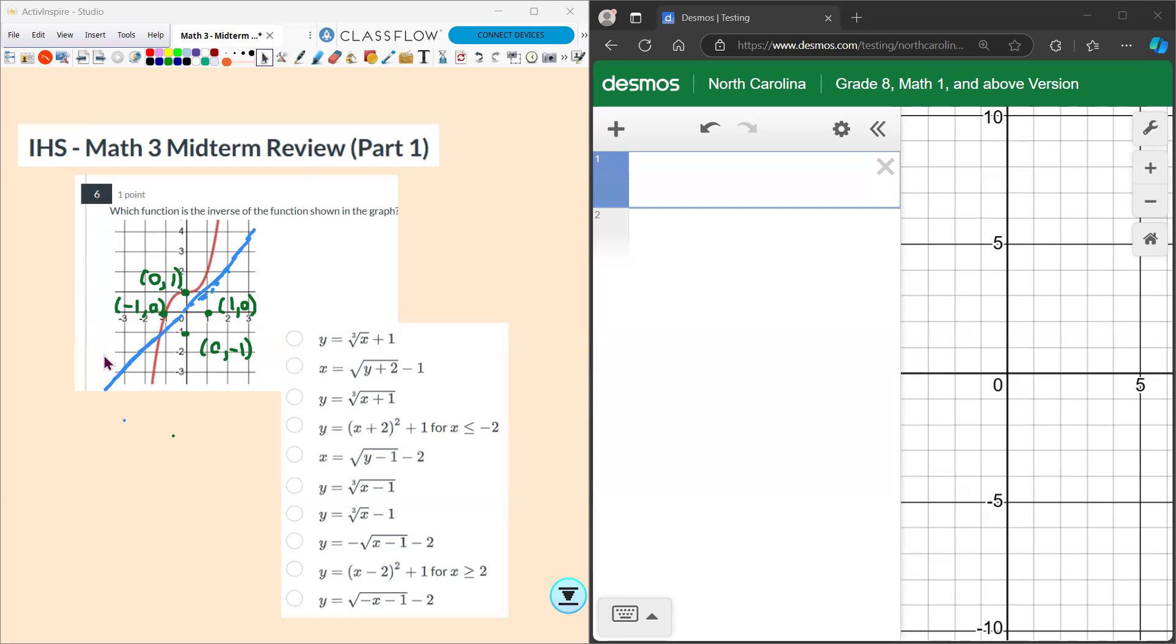And so our graph, that should be the inverse, should be a mirror image over that line. So it's going to hit there, kind of come in a little bit and then go back out. So we're looking for the graph that basically looks like this.